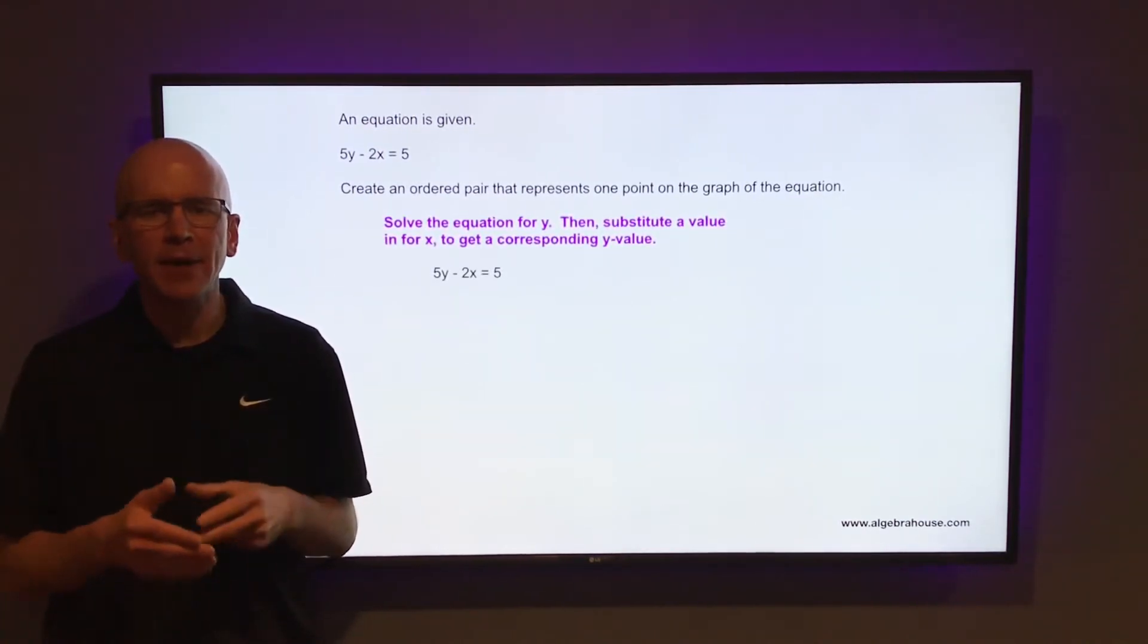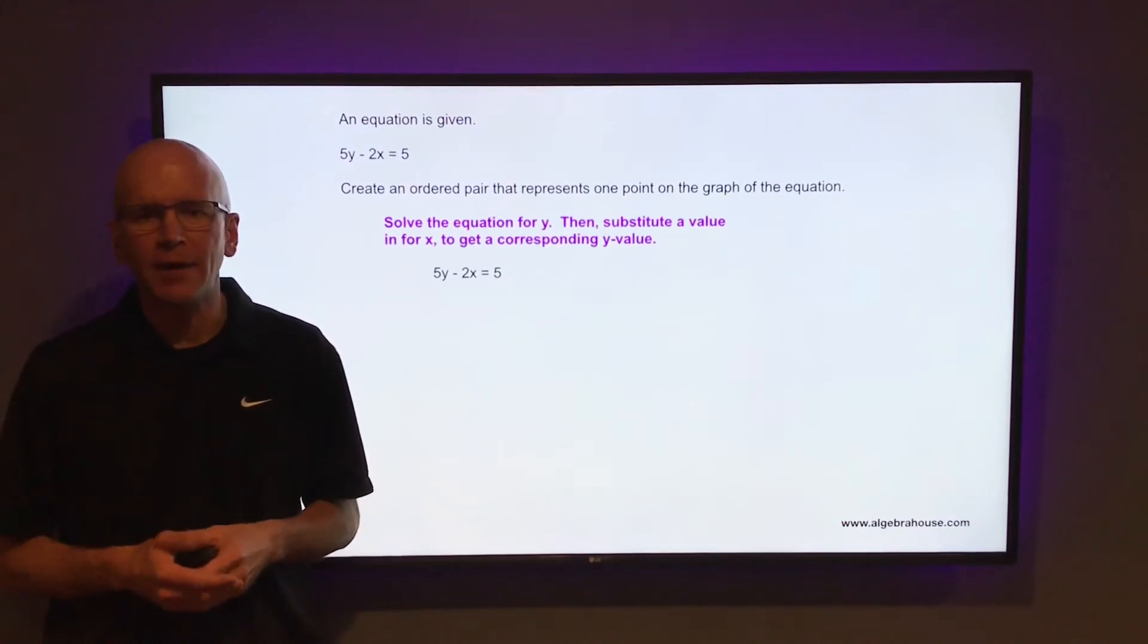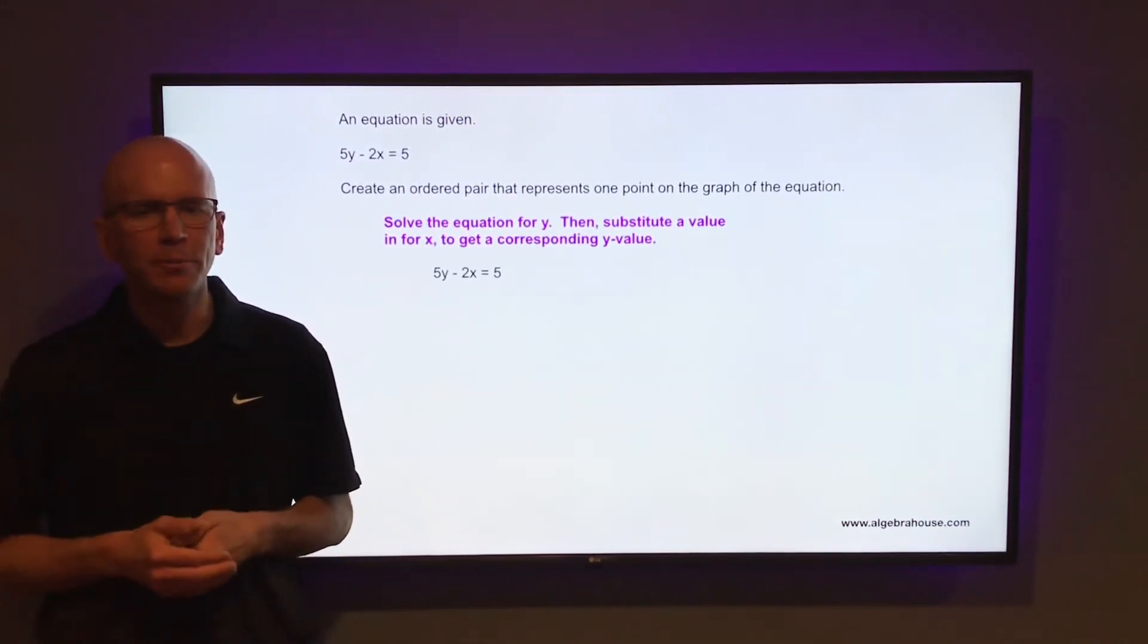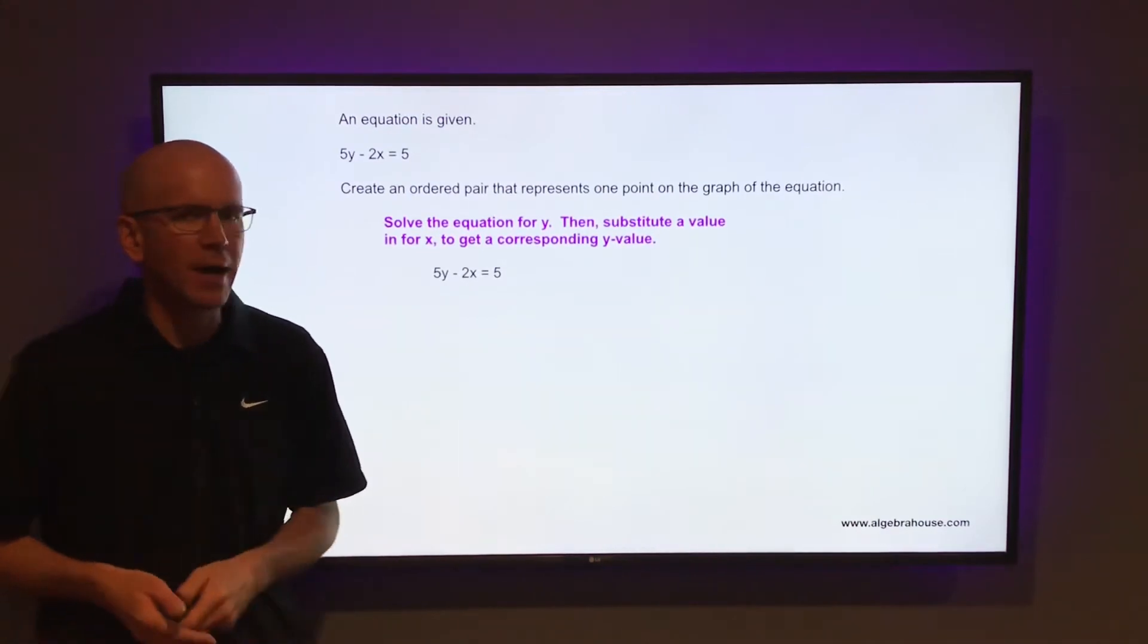Then we're going to substitute a value in for x, and that will create a corresponding y value. So then you have an x value, a y value, and that will be your ordered pair.